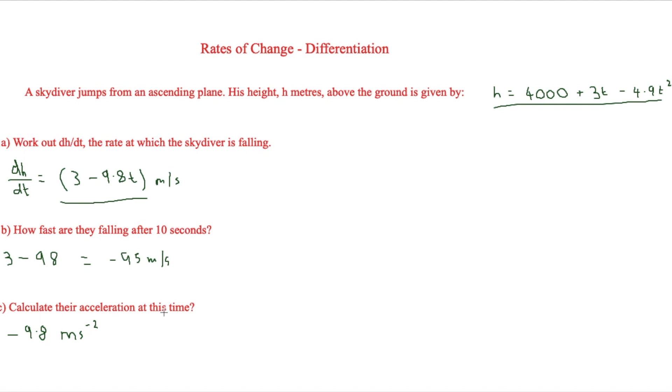So that's how you work out rate of change and look at it when there's a context as well. Often you will have a context in this, and you just have to know how to manipulate a formula in order to find out velocity or acceleration using differentiation. So thank you for watching this video and see you soon. Bye.